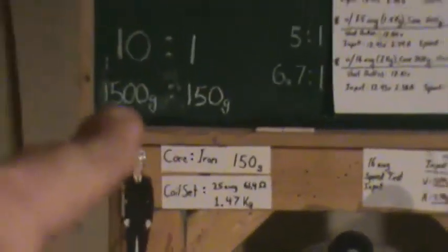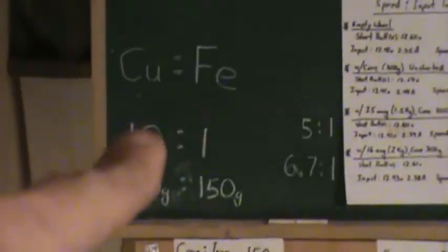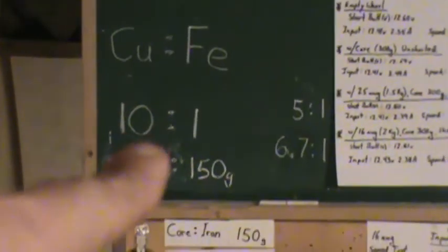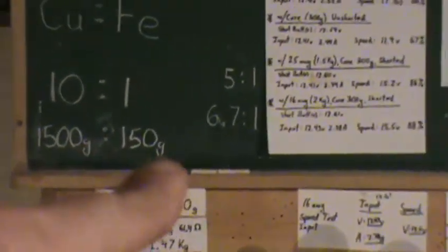So it's a 10 to 1 copper to iron ratio this time. We'll see what happens. First of all, I have a switch on it this time, and right now the switch is open, just like this diagram right here.